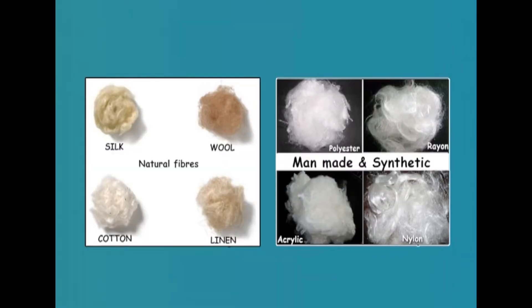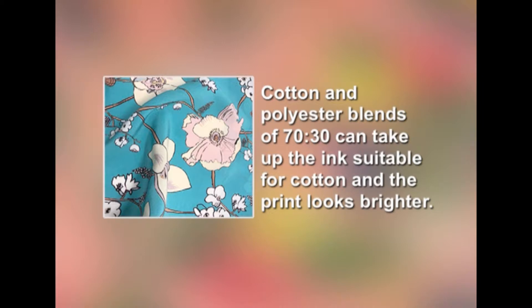Natural fibres such as cotton, linen, silk, wool, and manmade and synthetic fabrics such as viscose, polyester, nylon, lycra, etc. are suitable for digital printing. Blended and union fabrics are also printed satisfactorily using this technology. Generally, the machines can only cater to one type of fibre as the ink cannot be mixed for printing. Blended or union fabrics having higher content of one fibre look brighter. For example, cotton and polyester blends of 70-30 can take up ink suitable for cotton and the print looks brighter.